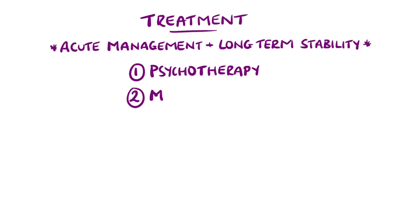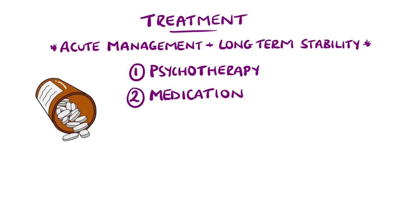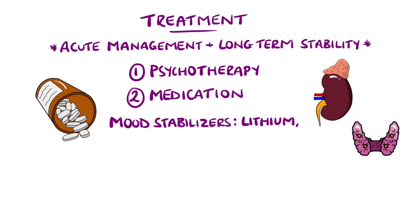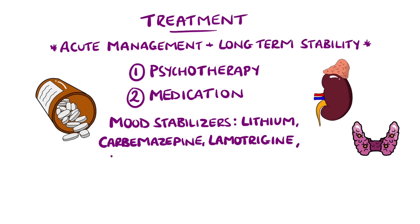Medication is frequently used across multiple classes. Mood stabilizers like lithium have been shown to be particularly effective in acute manic episodes and also help prevent relapses and bipolar depression. However, lithium requires monitoring as it can have side effects involving the kidney and thyroid. Other options include carbamazepine, lamotrigine, and valproic acid, which are anti-epileptic medications.